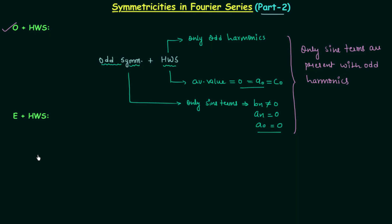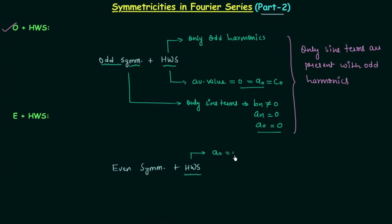Now we move to even plus half wave symmetry, which is formed by two symmetries: even symmetry and half wave symmetry. This symmetry occurs when the given signal is both an even signal and a half wave symmetric signal. From half wave symmetry, A0 is equal to 0 and only odd harmonics are present.